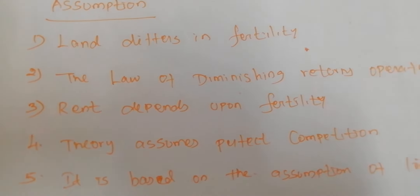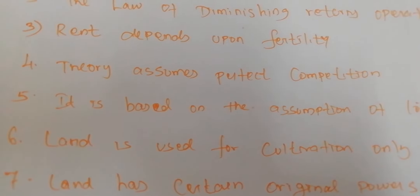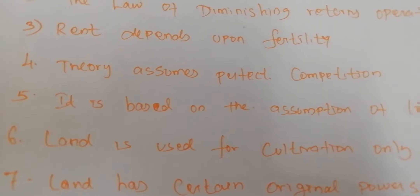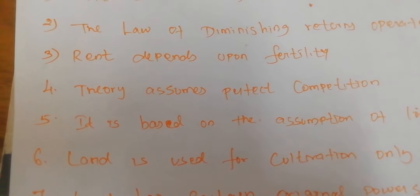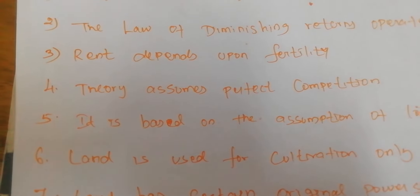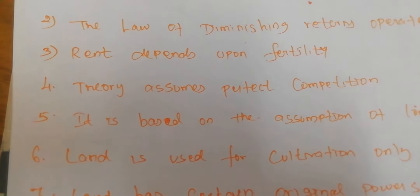When the A-grade land cannot supply enough for new settlers, the new people use B-grade land. Comparing the two, A-grade land produces 40 bags of paddy per acre, while B-grade land produces only 30 bags. So A-grade land has a surplus of 10 bags over B-grade land, and this surplus is considered the rent for A-grade land.